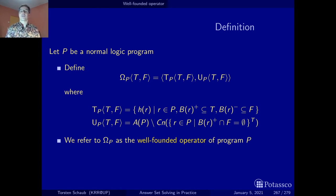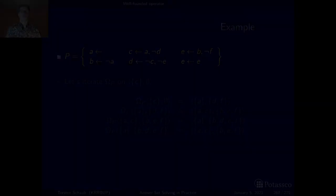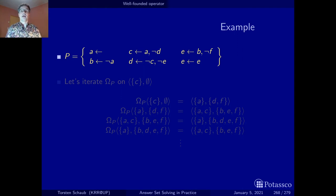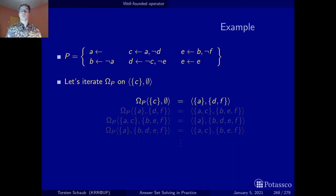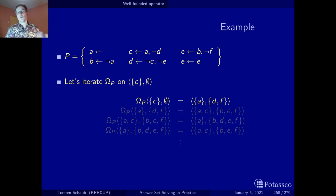Now let's have an example and see this guy in action. Let us return to our good old running example and apply the associated well-founded operator to an arbitrary partial interpretation. Here I've chosen one that makes C true and no atoms false. Let's apply the well-founded operator of this program to this partial assignment. We only know that C is true and no atoms have been detected to be false — everything else is unknown. First, let's look at what the operator makes true. We have our good old fact A, and of course this must be true in the result, and it is. Actually we see that there is no other true atom.